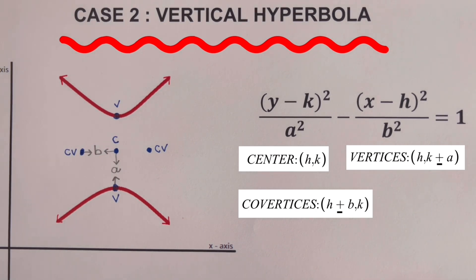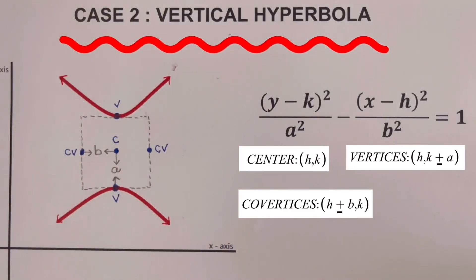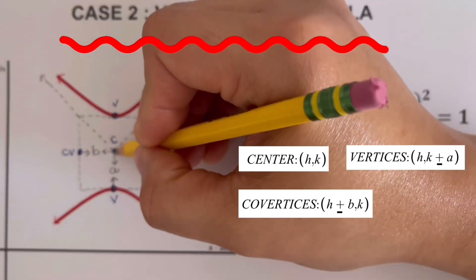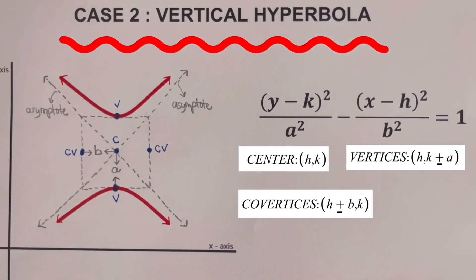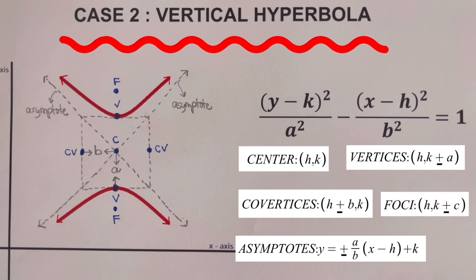This vertical hyperbola has two asymptotes. To easily sketch the asymptotes, we are going to draw a rectangle that passes through the two vertices and the two co-vertices. The two asymptotes pass through the corners of this rectangle through the center. The equation of the two asymptotes for the vertical hyperbola is Y equals plus or minus A over B, quantity X minus H, plus K. We also have two foci, and the coordinate of the two foci would be H comma K plus or minus C.